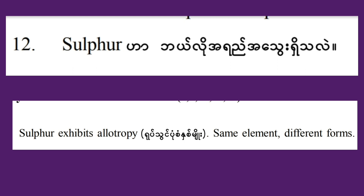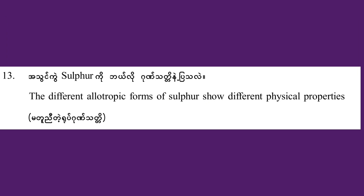Sulfur exhibits allotropy. The different allotropic forms of sulfur show different physical properties. Allotropic forms are distinguished through physical properties.